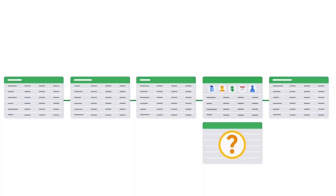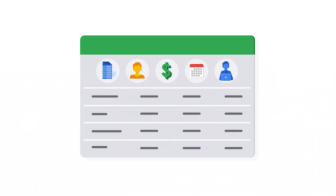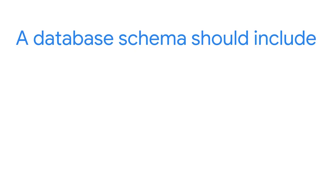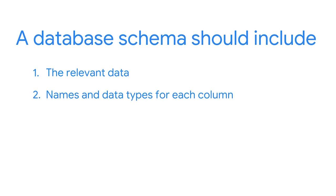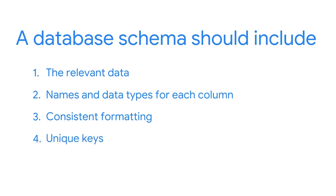Finally, it's important that there are unique keys for each entry within the database. Primary and foreign keys build connections between tables and enable us to combine relevant data from across the entire database. In summary, in order for a database schema to be useful, it should contain the relevant data, names and data types for each column, consistent formatting across all entries, and unique keys connecting the tables. These four elements will ensure that your schema continues to be useful. Developing your schema is an ongoing process — as your data or business needs change, you can continue to adapt the database schema to address these needs.